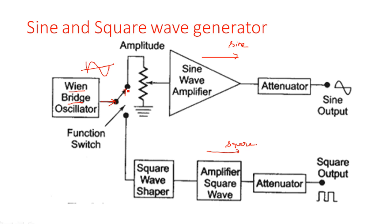If the function switch selects the sine wave circuit, the first block is an amplitude selector — a potentiometer arranged to select the amplitude of the incoming signal. The output is given to the sine wave amplifier. In any signal generator, the amplifier and attenuator are very necessary. The amplifier amplifies the signal to a maximum level, and the attenuator selects the required amplitude level based on the experiment. The sine wave amplifier amplifies the signal, followed by an attenuator with a panel knob to select the required voltage level.